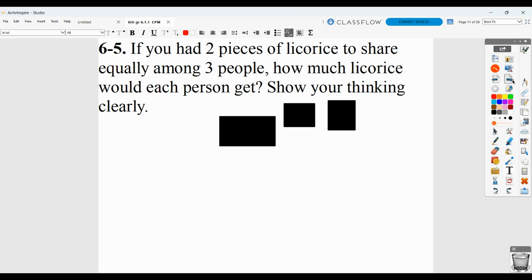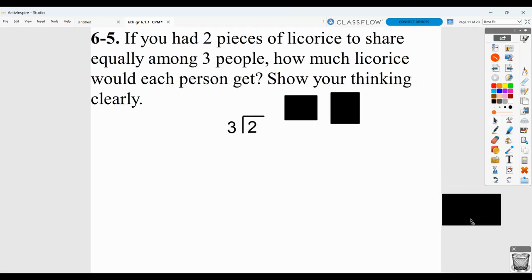So it says if you had two pieces of licorice to share equally amongst three people, how much licorice would each person get? And they want you to show your thinking clearly. So one way you could do it, of course, is to take the two pieces of licorice, divide by three. You could show that three would not go into two, so we'd put up a zero.